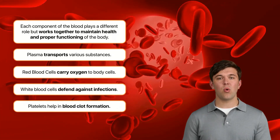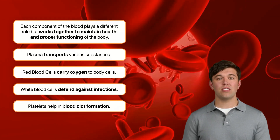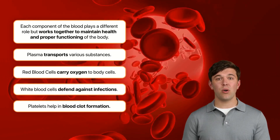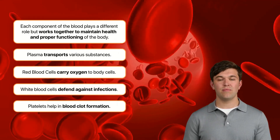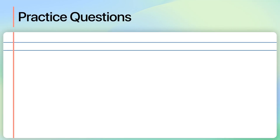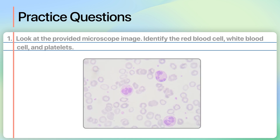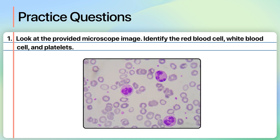Let's work through a question to consolidate our understanding of blood components and their adaptations. You need to be able to identify blood cells given microscope images. You can do this by identifying their key features. Look at the provided microscope image and identify the red blood cell, white blood cell and platelets.